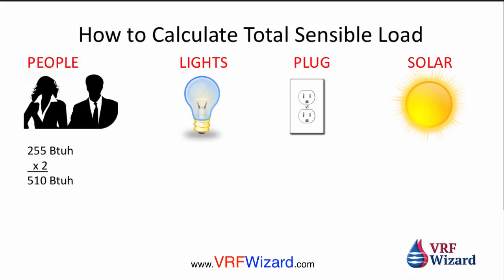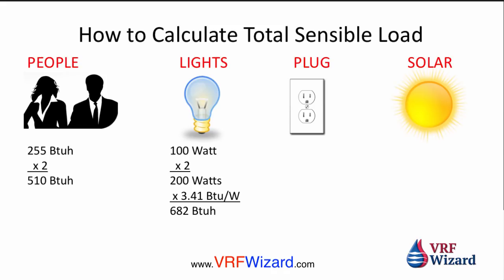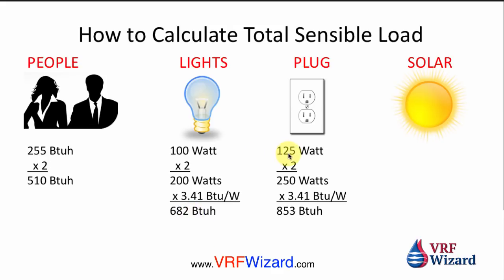Let's do a quick sample load calculation. For people, assume light activity at 255 BTUs per hour with two people — that gives a people load of 510 BTUs. This is a small office, 20 by 10 feet, so 200 square feet with two people. For lighting, two 100-watt light bulbs: 2 × 100 = 200 watts × 3.41 BTUs/watt = 682 BTUs. For plug loads, two items at 125 watts each = 250 watts.